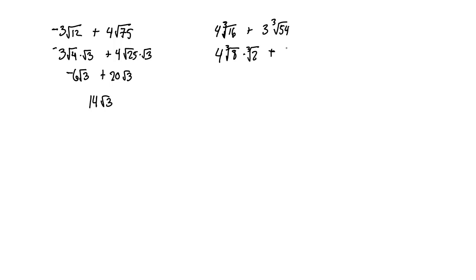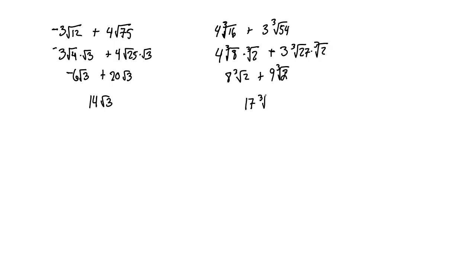For 54, we get 27, so that's 3 times the cube root of 27 times the cube root of 2. The cube root of 8 is 2, giving 8 cube root 2, and 3 times the cube root of 27 is 3 times 3, giving 9 cube root 2. Adding these together: 8 plus 9 is 17 cube root 2.